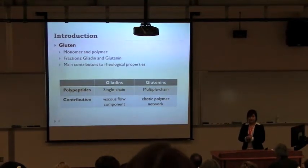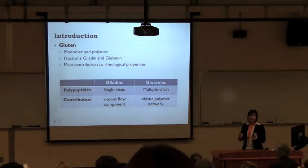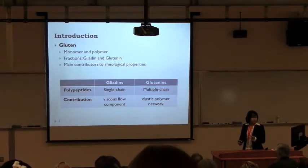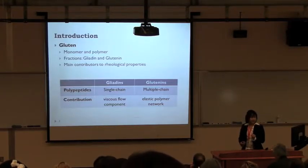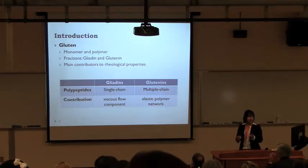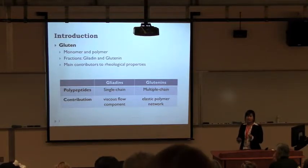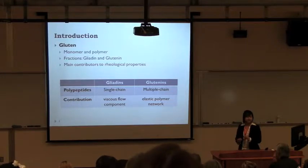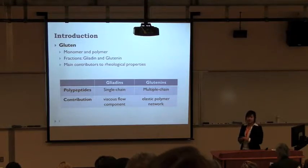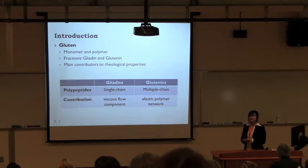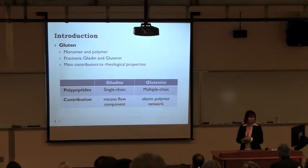Gluten is a very complex system that can be naturally found in wheat. If we fractionate it according to solubility, we can obtain two fractions: gliadin and glutenin. Both fractions are very important contributors to the biological properties of dough. Gliadin is a single-chain polypeptide which contributes to the viscous portion, while glutenin is multiple chains which contributes to the elastic polymer network.